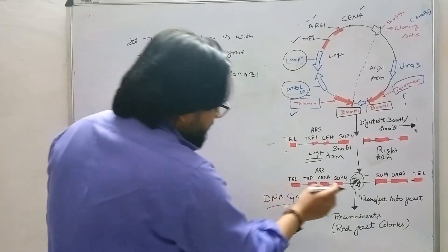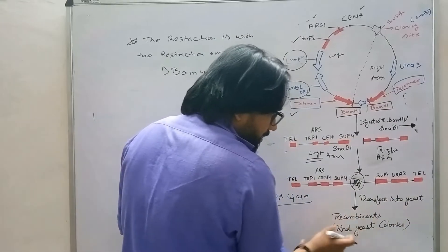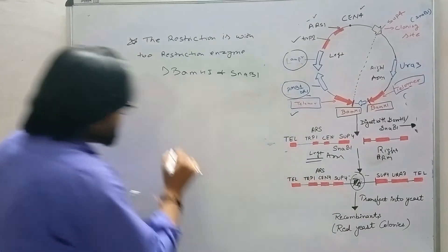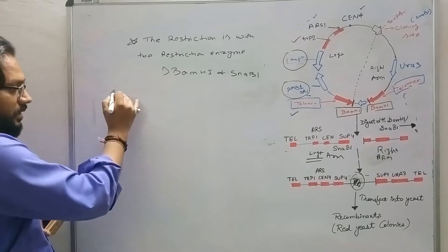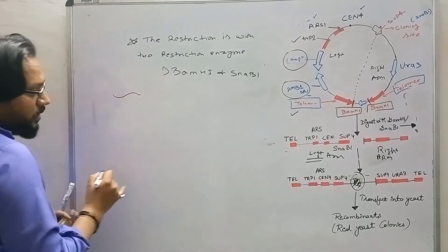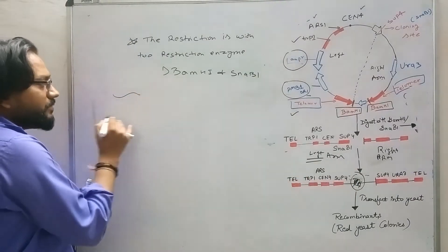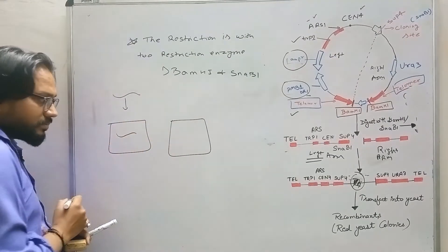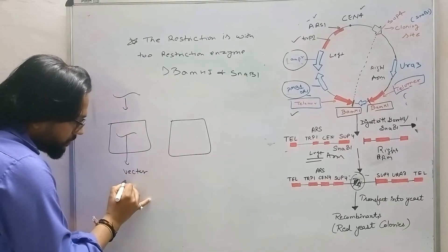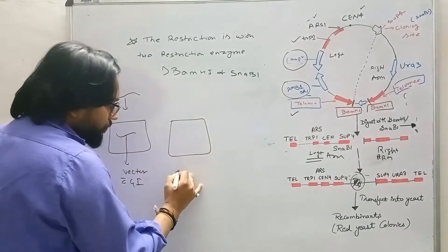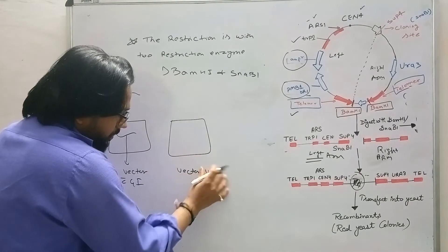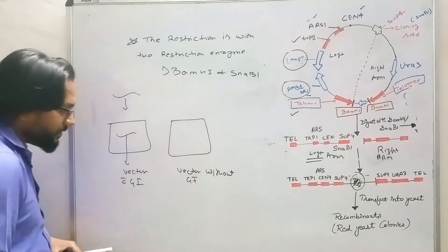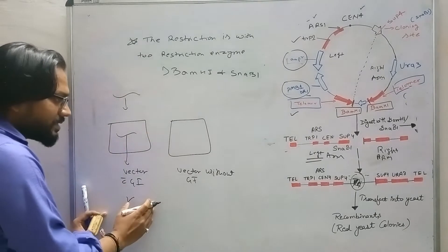Now we will transform and transfect into the yeast cell, then go for recombinant selection — to determine which one is recombinant and which is non-recombinant. When we transform, there is a chance that we'll get a vector with gene of interest, and another chance of getting a vector without gene of interest. We need to identify the cell that contains the gene of interest.